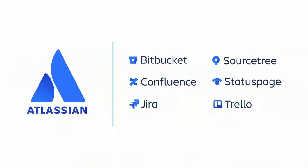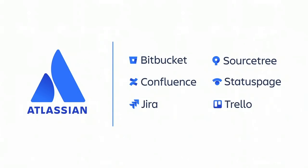For those of you who aren't familiar with Atlassian, we are the team behind products such as Jira and Trello, which are agile project management and issue tracking tools; Bitbucket and Sourcetree, used for collaborative coding; Confluence, used for collaborating on documentation; and also Status Page, for communicating incidents and status.